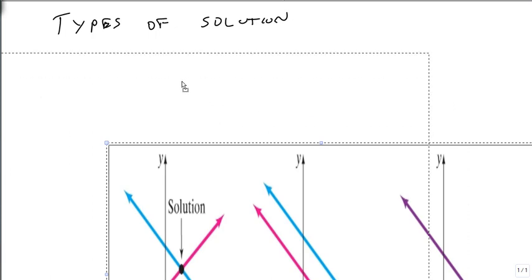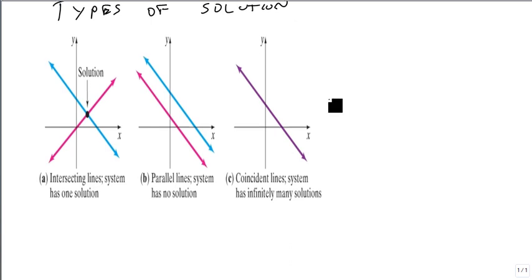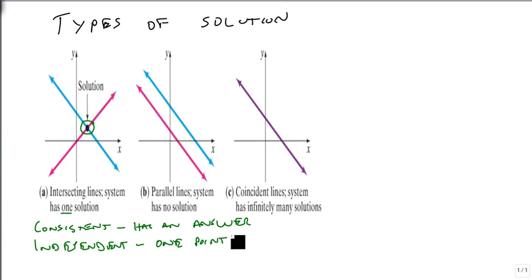Now the last thing we want to talk about are the types of solutions. To do this, we're going to use a picture representation. Here we have our three types of solutions. Notice that all three of these are linear equations, but in our first case, we get only a single point as our answer, just right here. There's only one answer, and since it has an answer, we say it's consistent, meaning it has an answer. It's independent because there's only one point as the answer. This is a consistent, independent system.